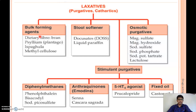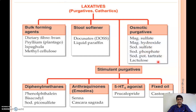Examples of bulk forming agents are dietary fibers like bran, psyllium such as ispaghula, and methylcellulose. Stool softeners include docusate and liquid paraffin. Stimulant purgatives are classified by chemical structure: diphenylmethane derivatives like phenolphthalein, bisacodyl, and sodium picosulphate; anthraquinones like senna and cascara sagrada; 5-HT4 agonists like prucalopride; and fixed oils like castor oil. Osmotic purgatives include magnesium sulfate, magnesium hydroxide, sodium sulfate, sodium phosphate, sodium potassium tartrate, and lactulose.